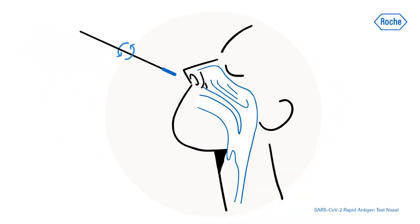Rotate the swab while inserting it two centimeters, slightly less than one inch, into the nostril and parallel to the palate until resistance is met at the turbinates.